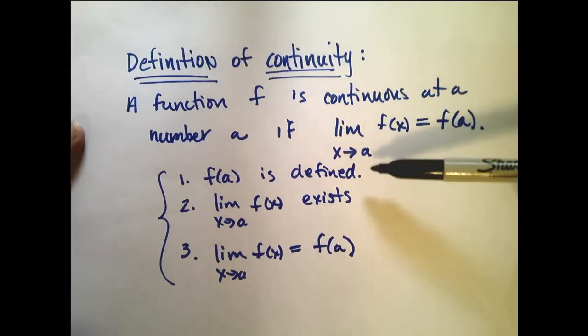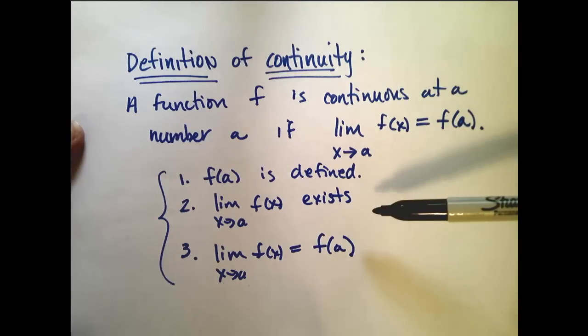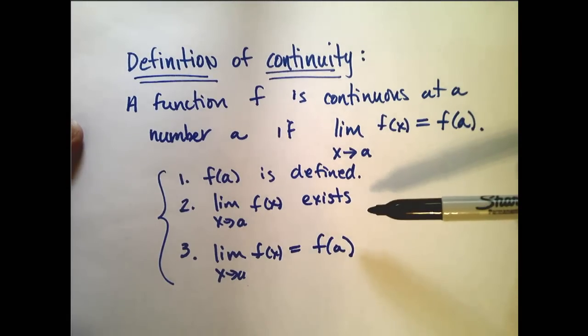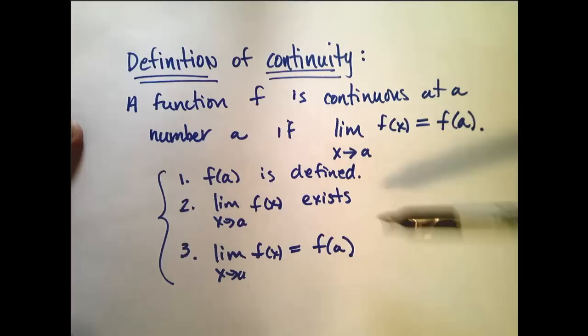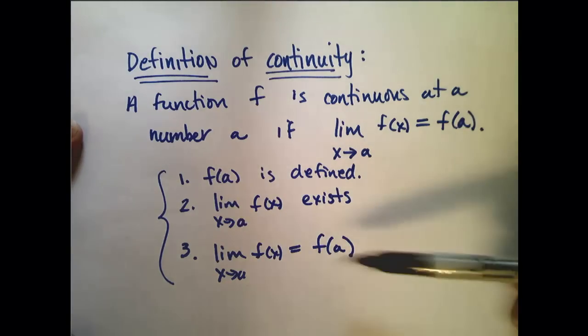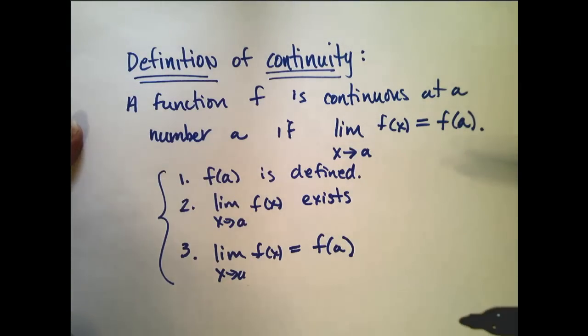And remember that said three things. One, that f of a is defined. Two, that the limit as x approaches a of f of x actually exists. And three, that limit is equal to the function value at a.